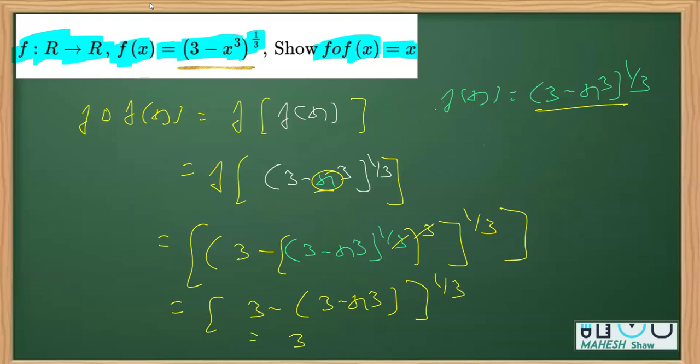On further simplification, we get (x³)^(1/3). These powers cancel, so we are getting x. That's what we needed to prove.